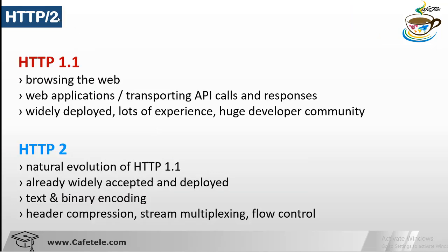We have two different protocol interfaces: HTTP/1.1 and HTTP/2. HTTP/1.1 is the baseline protocol used for web browsing, web applications, transporting API calls and responses, and is widely deployed with a large developer community. HTTP/2 is an evolution of HTTP/1.1, already deployed, supporting text and binary encoding with JSON. HTTP/2 also has the benefits of header compression, stream multiplexing, and flow control.